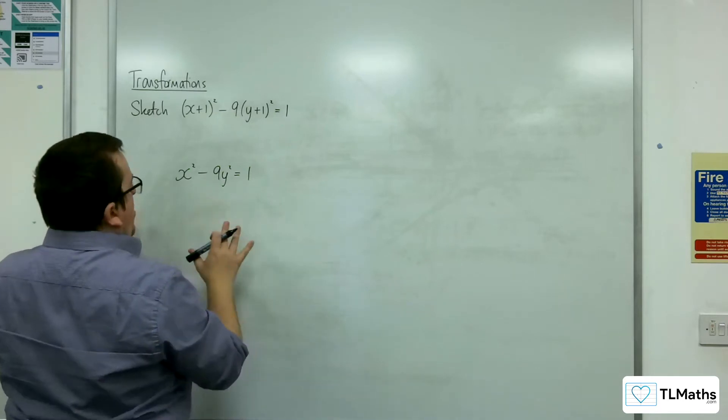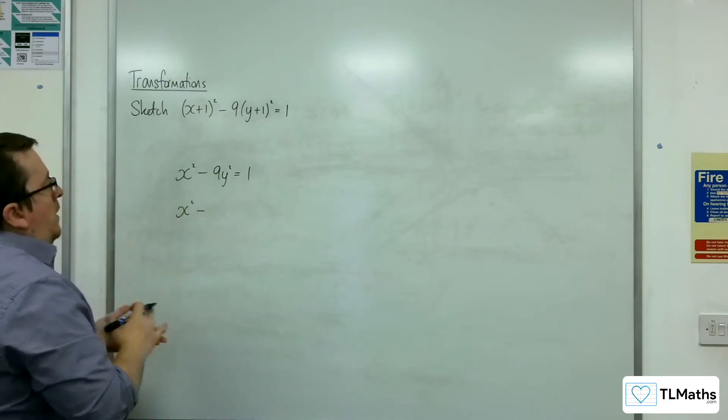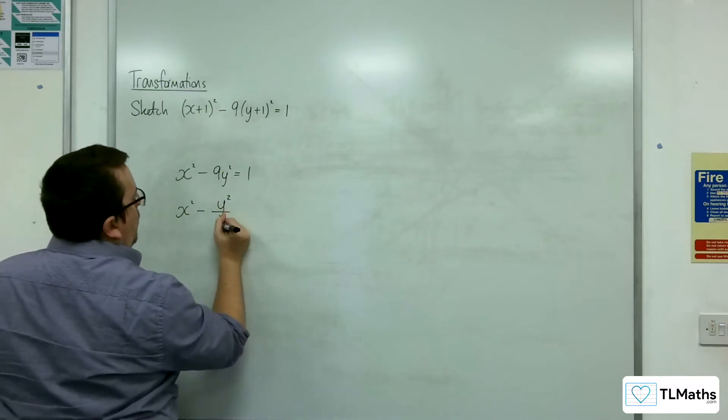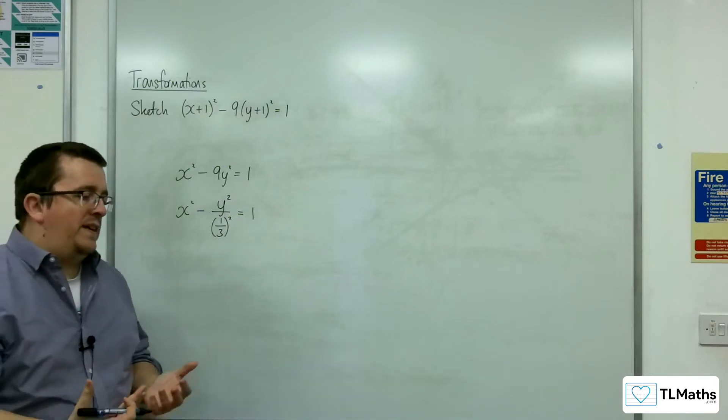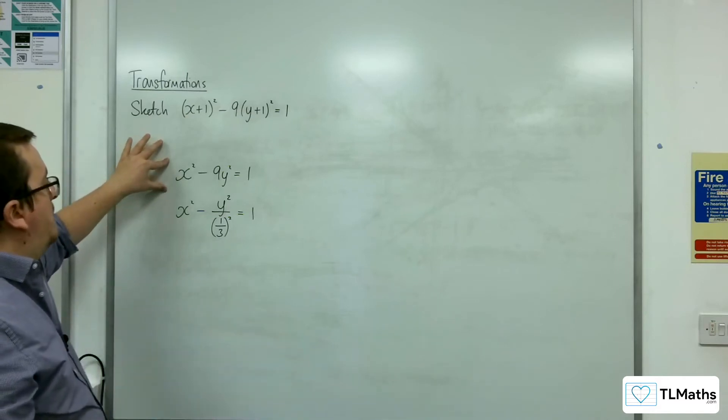Now we can rewrite that as x² take away, now I want to write it as y² over something, and so this would have to be (1/3)². Because if I divide by (1/3)², that's dividing by 1/9, which is the same as multiplying by 9. So these two things are the same.